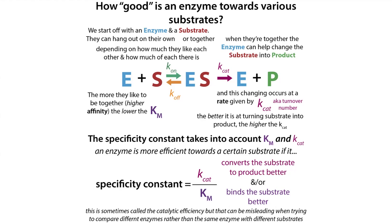If you want to think about how good an enzyme is for a substrate, you need to consider both the Km and the Kcat. We have a value that does this, called the specificity constant — sometimes called the catalytic efficiency — and it's the Kcat over the Km.